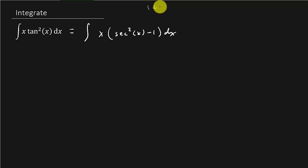Because we have a property that says 1 plus tangent squared x is equal to secant squared x. And then if I move the 1 to the other side, I get tangent squared is equal to secant squared minus 1.